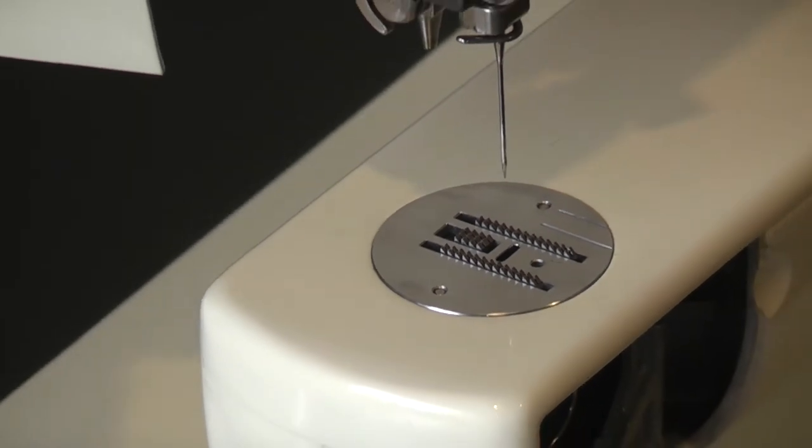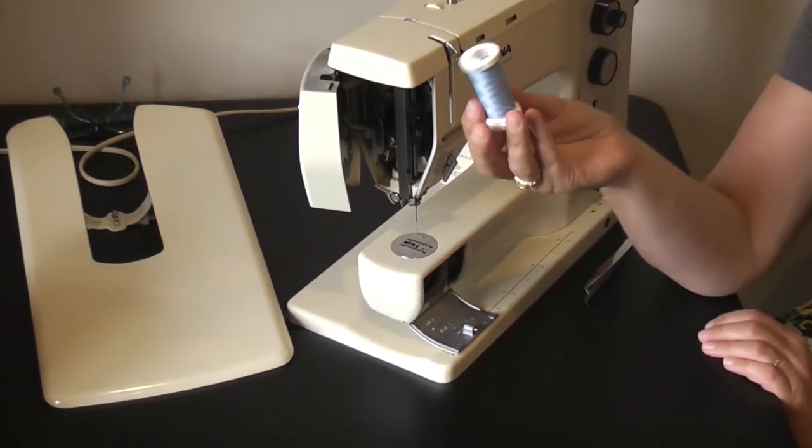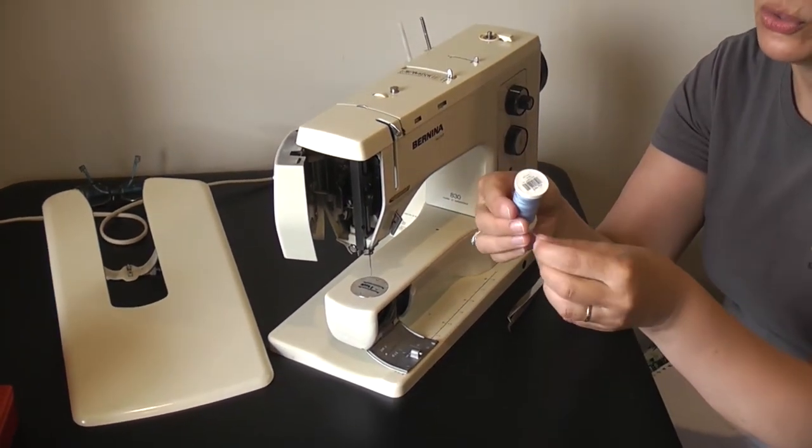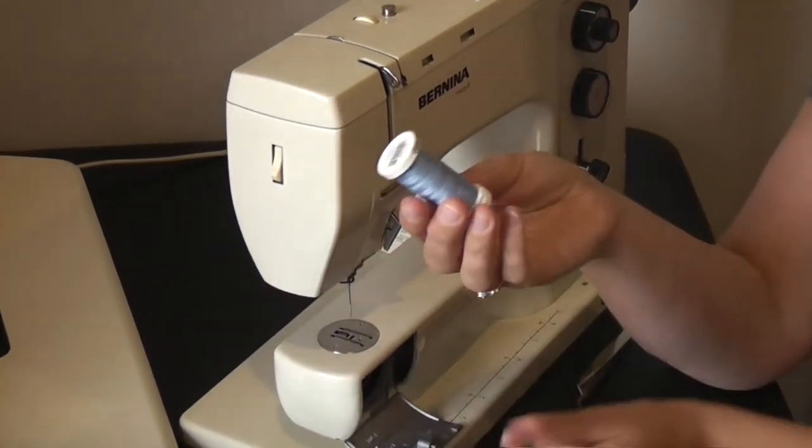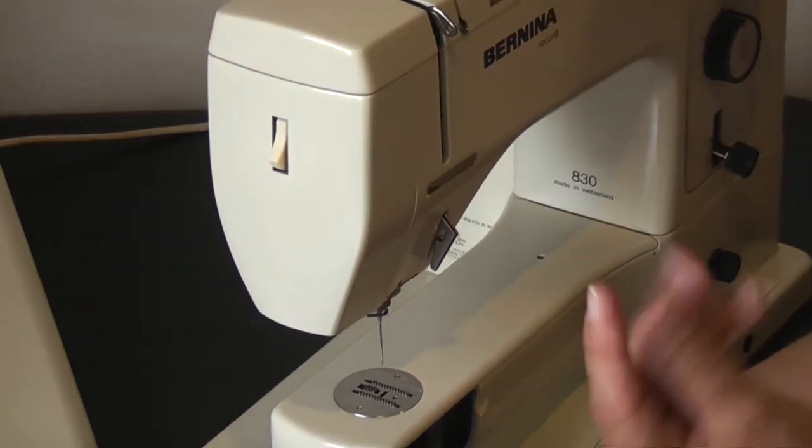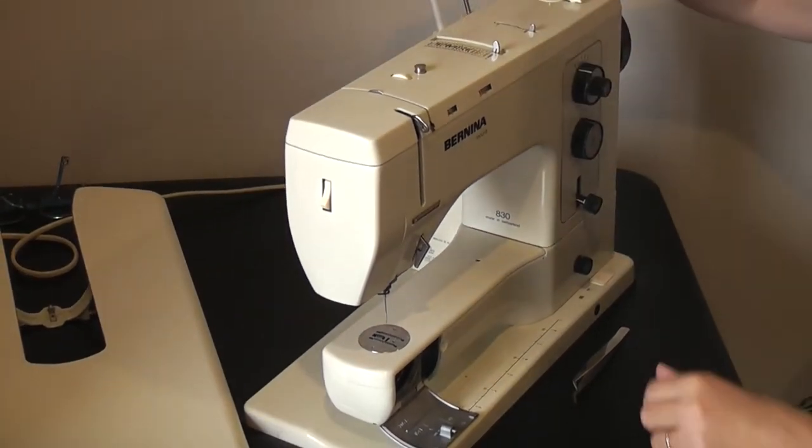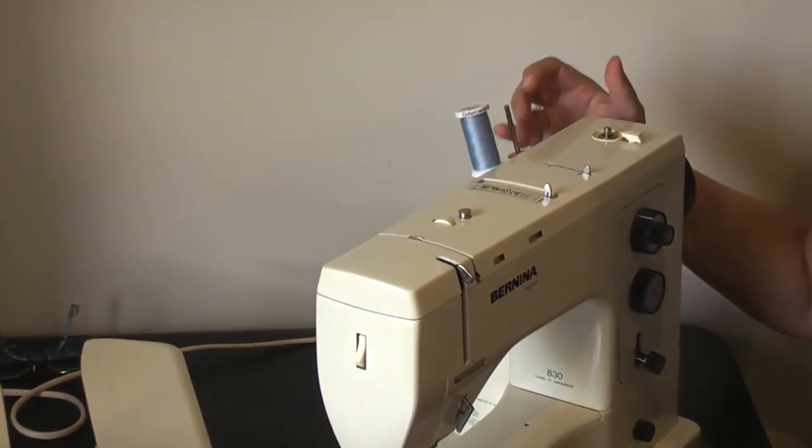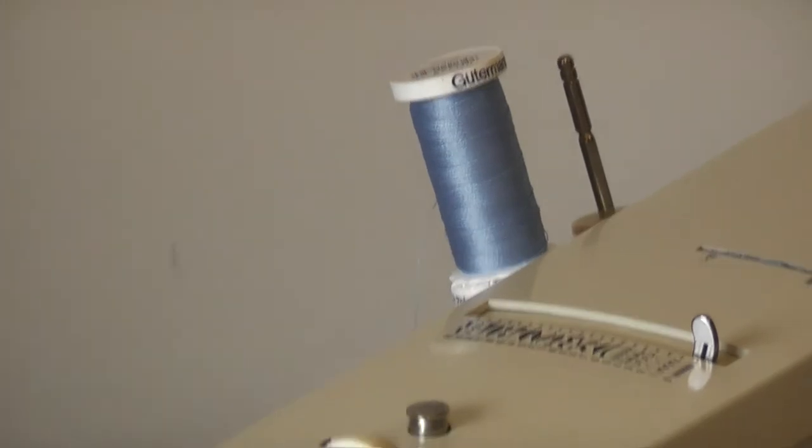Some basic supplies that you will need to get started: obviously some thread. I personally prefer Gutermann thread, which is a 100% polyester all-purpose workhorse type of thread. It's nice and smooth. If you go with the cheaper ones, you're going to end up with quite a lot of lint inside your mechanism, which can heat up and cause problems. The thread goes on the thread spool, and on top of my thread spools have a little cushion of felt which stops it rattling around too much.